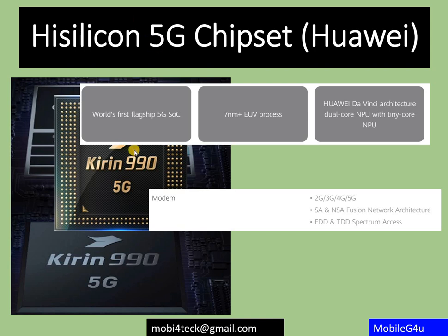Huawei's HiSilicon produces the Kirin chipset. The Kirin 990 5G is built on a 7nm process and supports 2G, 3G, 4G, and 5G with SA and NSA network architecture, plus FDD and TDD spectrum access. The underlying technology across chipset vendors is essentially the same — what differentiates them is how capable their developers are and how well they implement it.